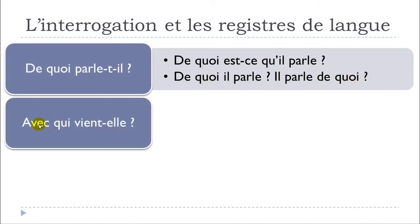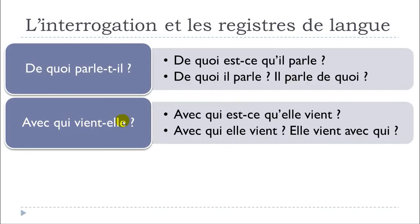'Avec qui vient-elle?' — 'With whom is she coming?' Note that 'venir' is to come, and 'venir avec' is to come with. The everyday form: 'Avec qui est-ce qu'elle vient?' — we add 'est-ce que'. Then the informal spoken forms: 'Avec qui elle vient?' and 'Elle vient avec qui?'